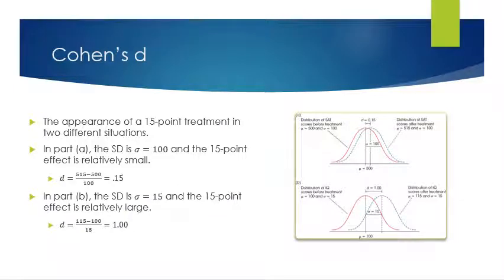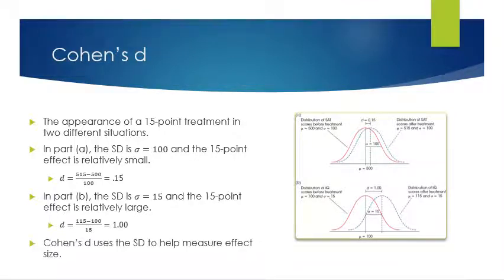Now Part B: the distribution of IQ scores before treatment has a mean of 100 and a standard deviation of 15. After treatment, the mean is 115 with a standard deviation of 15. There's still a 15-point effect. Calculating d: 115 minus 100 over 15 gives d equals 1, which is really large. So the smaller standard deviation gave us a much larger effect. Cohen's d uses standard deviation to help measure effect size.